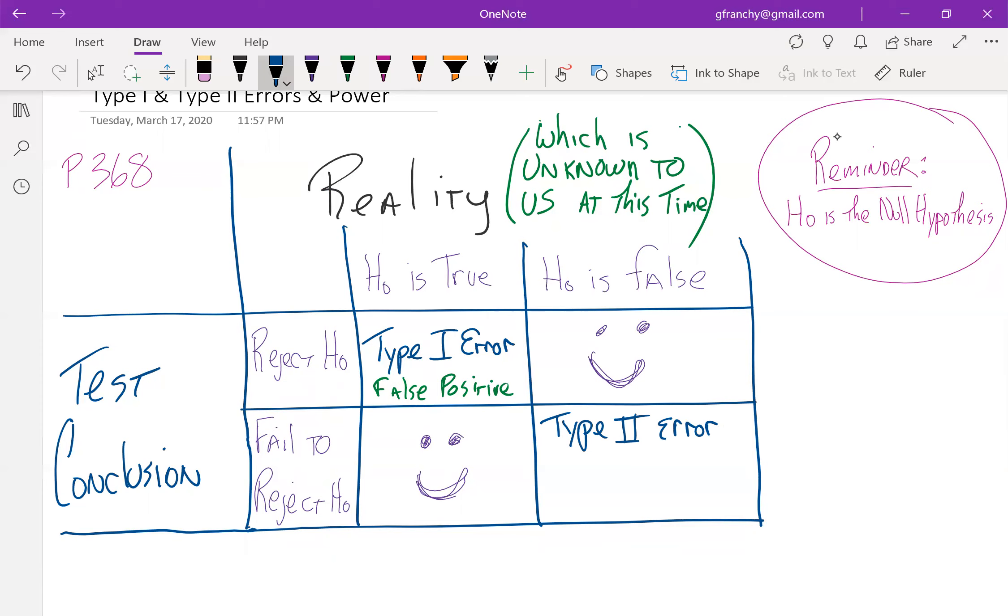And this is the equivalent of a false negative. So there was a change, but we conclude there wasn't. There was a difference between two things we're comparing, but we didn't conclude that they were different. There is a relationship between the two things that we're looking at, but we didn't conclude that there is. The treatment is effective, but we didn't conclude that it was effective.